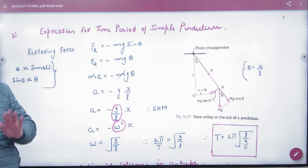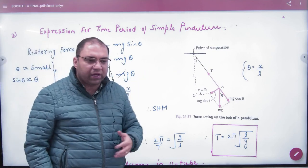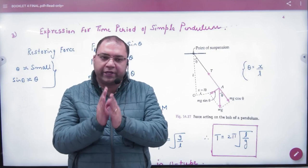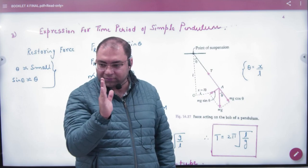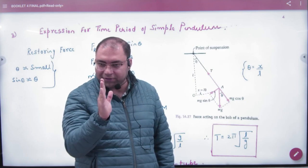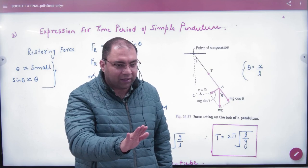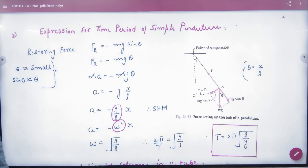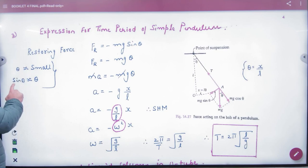Now there is an important assumption in SHM: the angle of displacement of the pendulum, or any body in SHM, is very small. The pendulum is not moving in large arcs — just a little bit. Theta is very, very small. This is a small angle. And when angles are very small in maths, note that sinθ can be written as θ.